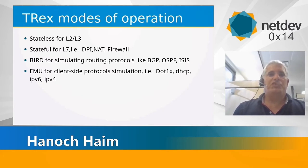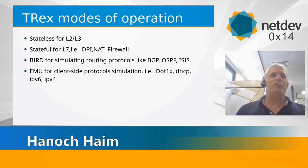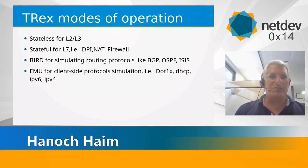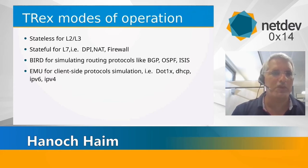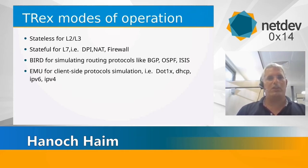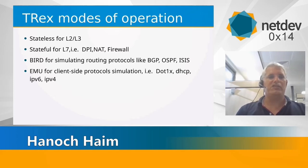The main operational modes of T-Rex are stateless — more for layer 2 and layer 3, for switches and routers — and stateful, which is for complex features like DPI, NAT, and firewall that have state for packets. We also have two additional services: Bird, an open-source daemon for routing protocols that can generate high-scale, event-driven BGP, OSPF, and ISIS; and EMU, for simulating clients at high scale.